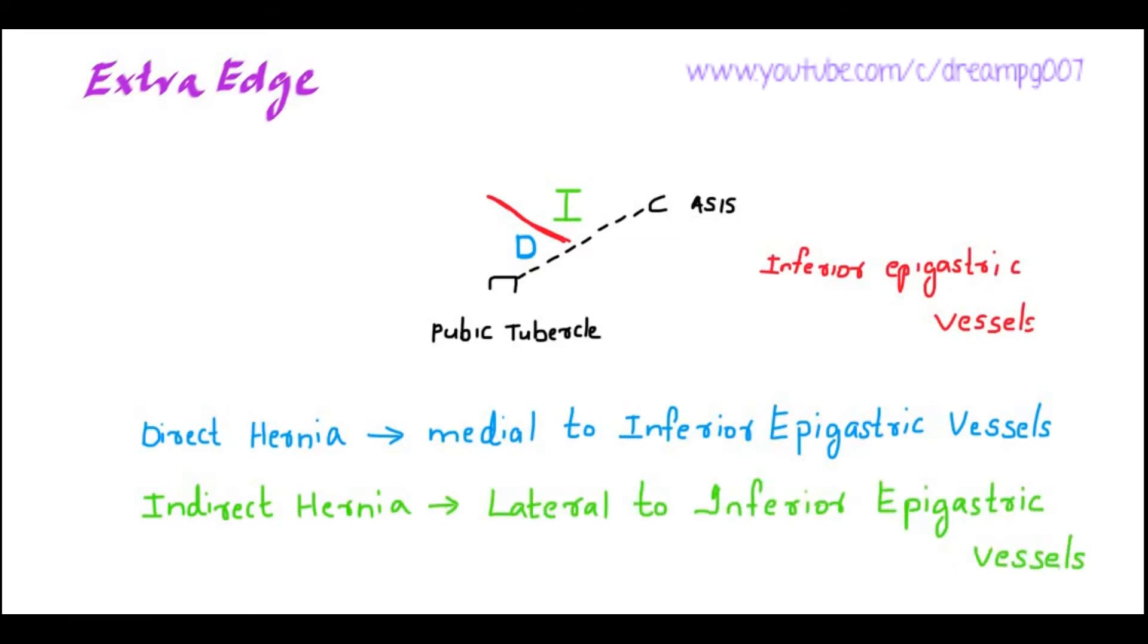Why is the indirect hernia called so? Because this hernia does not occur through a defect in the abdominal wall. This hernia occurs when the intestinal content comes through a patent processus vaginalis.